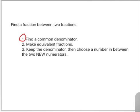Number one, make sure you have a common denominator. Step two, when you have a common denominator, make sure you have equivalent fractions. Step three, when you have those done, just make sure you keep the denominator, and then you have to choose a number between the two new numerators you found.